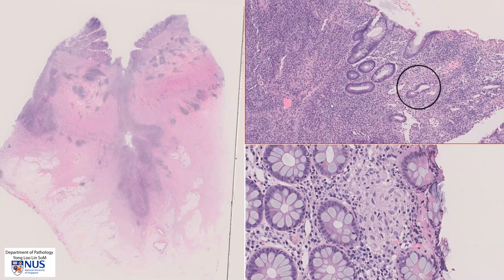The main differences between Crohn's disease and ulcerative colitis on microscopic examination are the presence of transmural inflammation in Crohn's disease, as well as deep ulcers, and also the presence of granulomatous inflammation. Thank you.